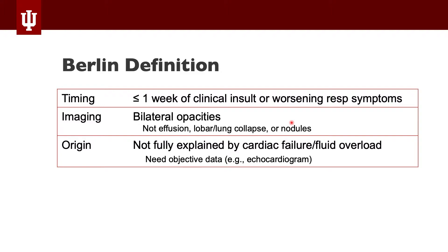We don't diagnose ARDS with a lung biopsy — we use clinical criteria. The Berlin definition requires timing of less than or equal to one week after the clinical insult. For imaging, we need bilateral opacities, but it can't be effusions, atelectasis, a large mass, or nodules. For origin, you need to exclude cardiac failure or volume overload — perhaps with an echocardiogram — to confirm it's not explained by a cardiac etiology.